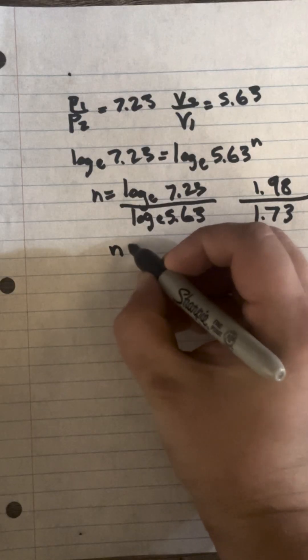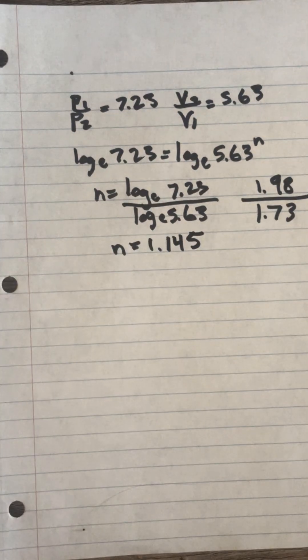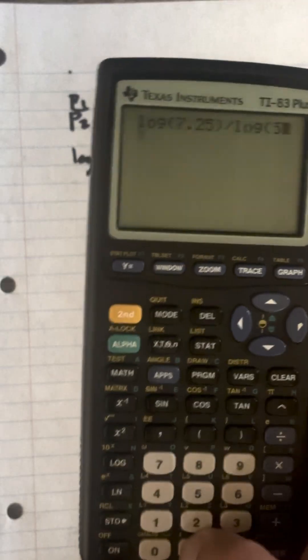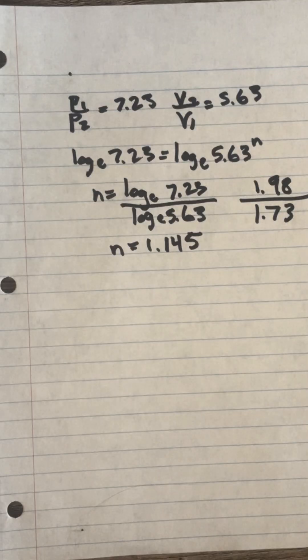Let's check that in the calculator. Natural log 7.23 divided by log 5.63, we get 1.146. And that's how it's done.